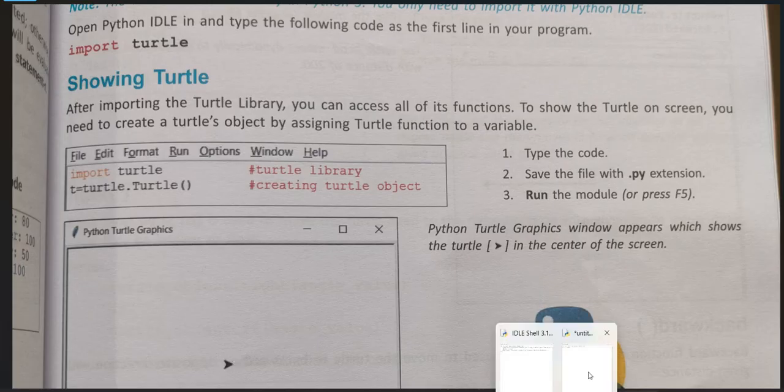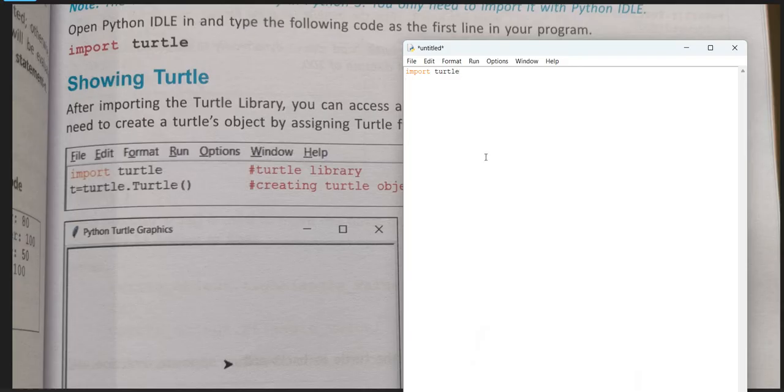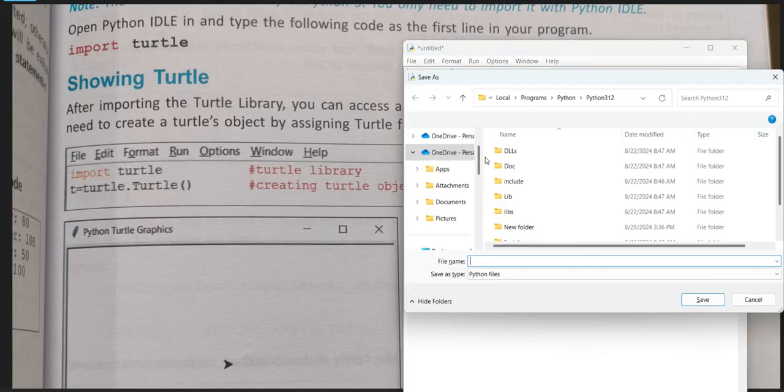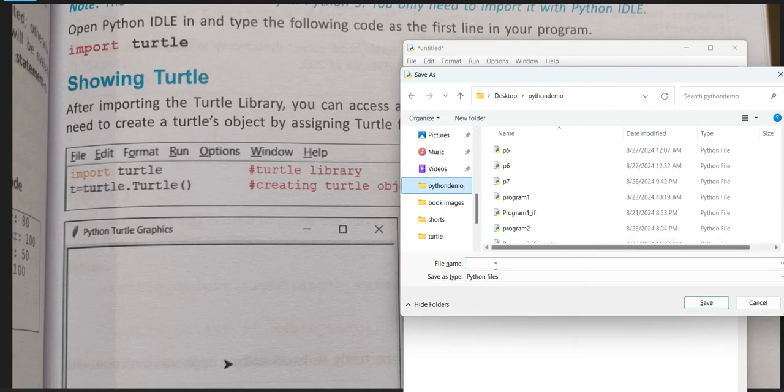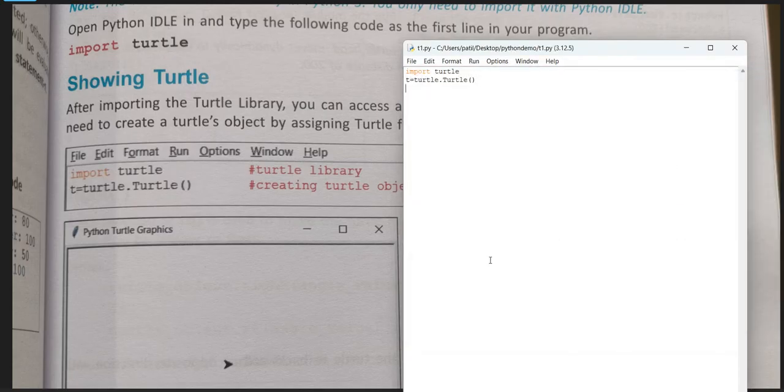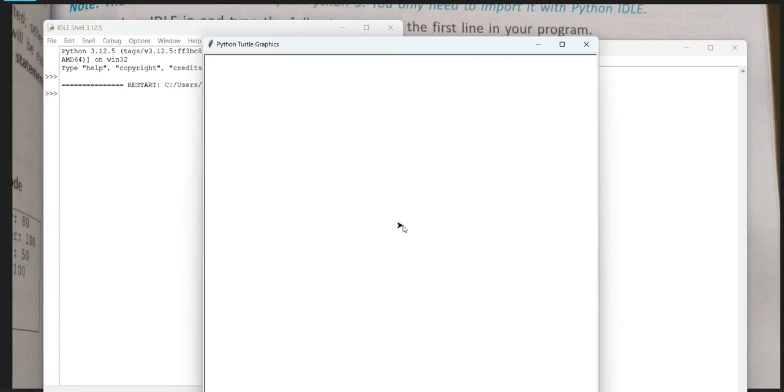Let's try this program. T equal to turtle dot turtle, opening closing brace. Now save this. T1 we will save. This saved as a dot py extension. Now run this program. Go to run, run module. You can see this is the turtle, this arrow. Now we can move this according to whatever we want to draw.